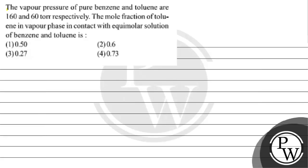Let's read this question. The vapor pressure of pure benzene and toluene are 160 and 60 torr respectively. The mole fraction of toluene in the vapor phase in contact with an equimolar solution of benzene and toluene is: option 1: 0.50, option 2: 0.6, option 3: 0.27, option 4: 0.73.